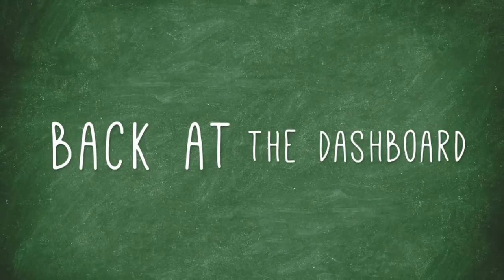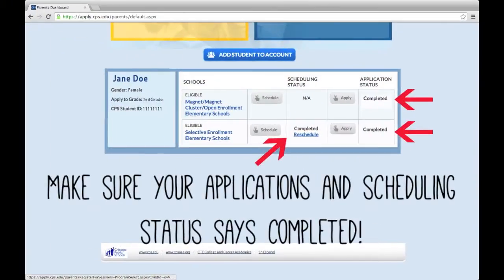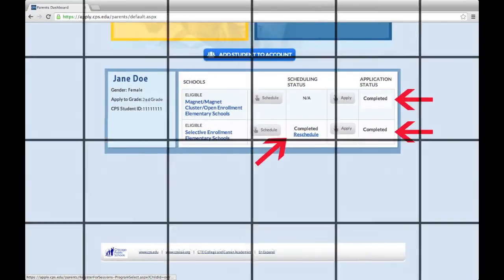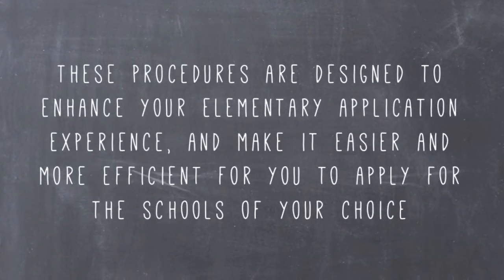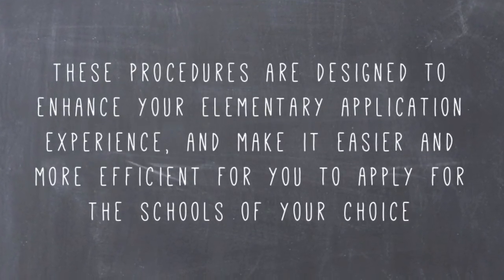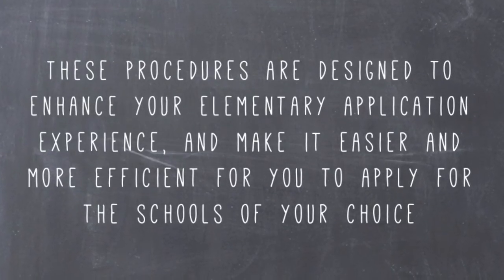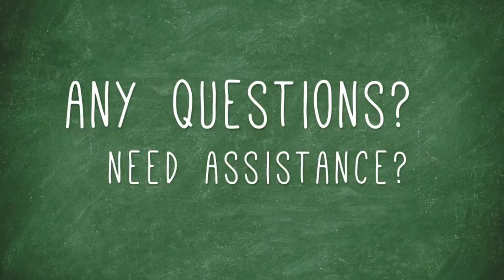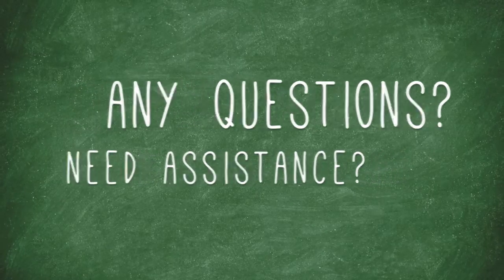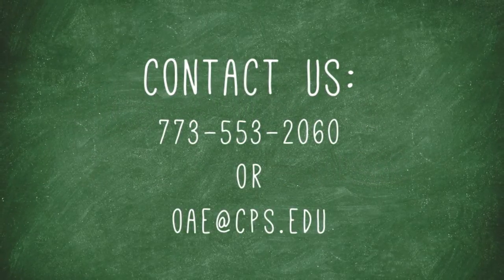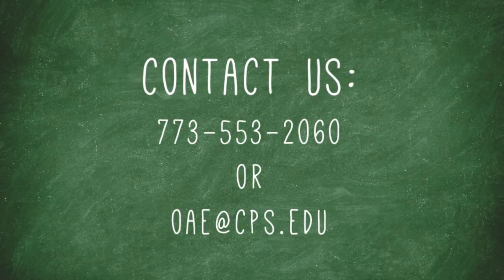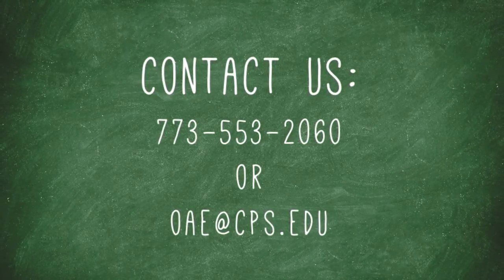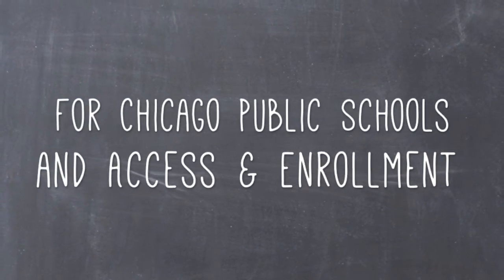Back at the dashboard, make sure your applications and scheduling status says Completed. These procedures are designed to enhance your elementary application experience and make it easier and more efficient for you to apply for the schools of your choice. If you have any questions or need assistance, please contact our office at 773-553-2060 or email us at oae@cps.edu. For the Chicago Public Schools and the Office of Access and Enrollment, thanks for watching.